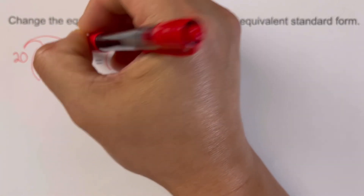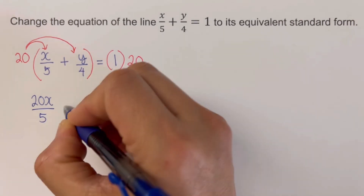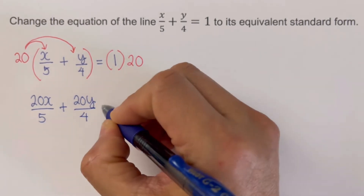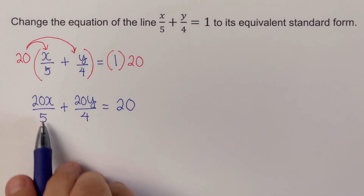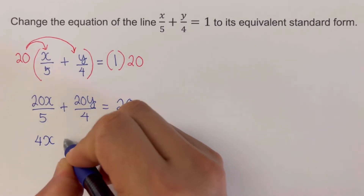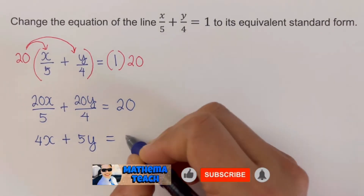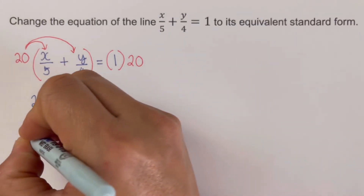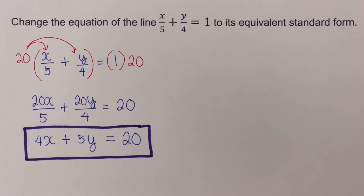Our equation comes out as: 20 times x is 20x over five, plus 20 times y is 20y over four, equals one times 20 which is 20. Simplifying further, 20 divided by five is four, so that's 4x, and 20 divided by four is five, so that's 5y, giving us 4x plus 5y equals 20. This is the equivalent standard form, where a is four, b is five, and c is 20.